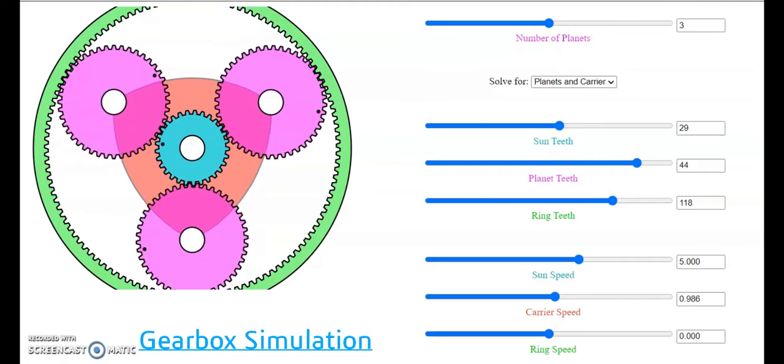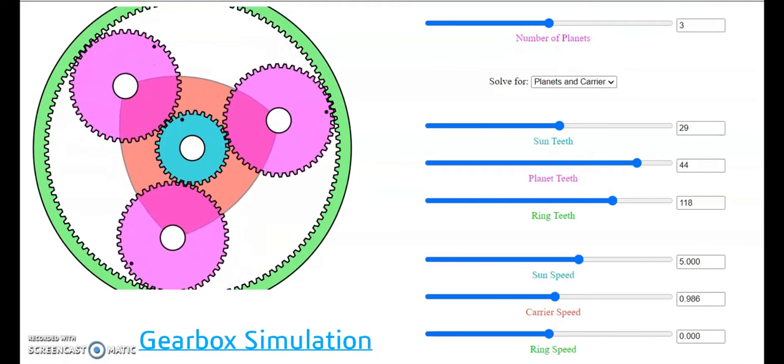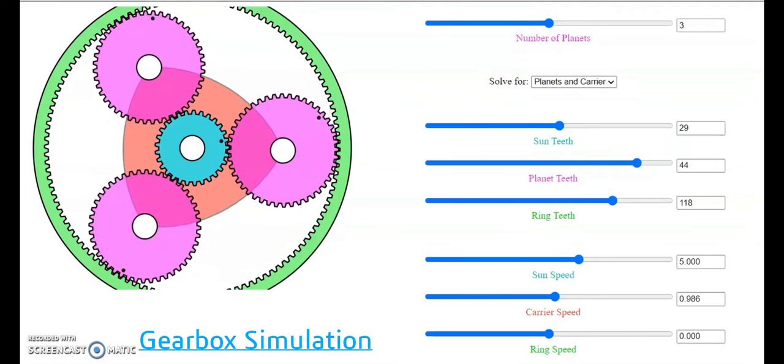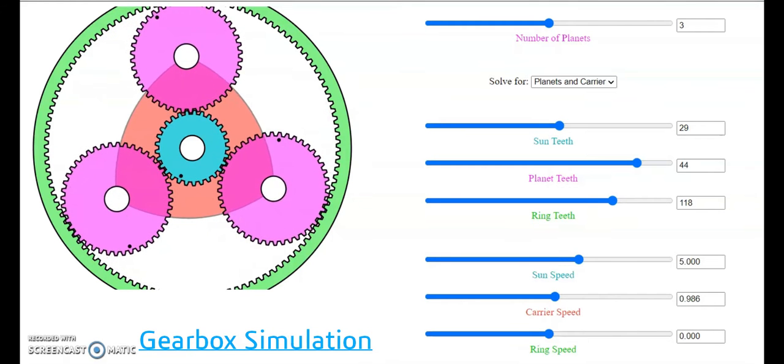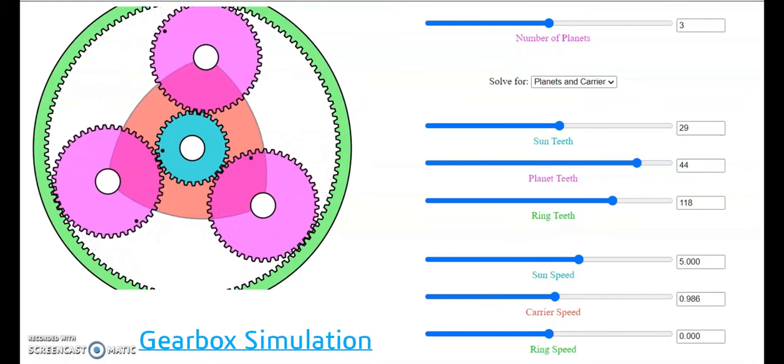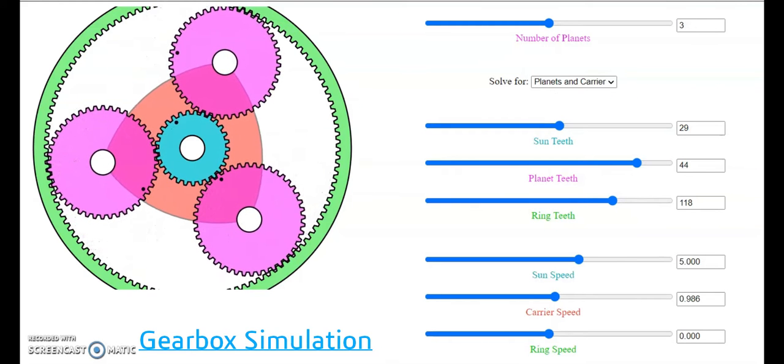This is the simulator I used to calculate the gear ratio needed to create the correct output speed from the bicycle wheel rotating on average 70 times per minute or 70 RPM. I used three planet gears.